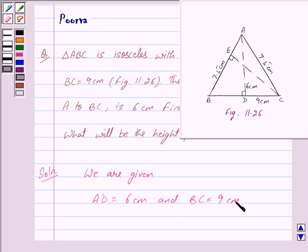We have to find the area of triangle ABC. Area of triangle ABC equals half times base times height.